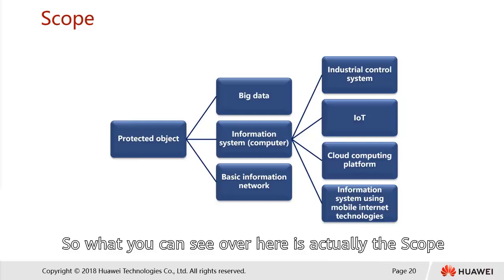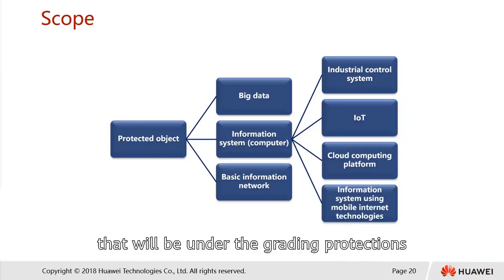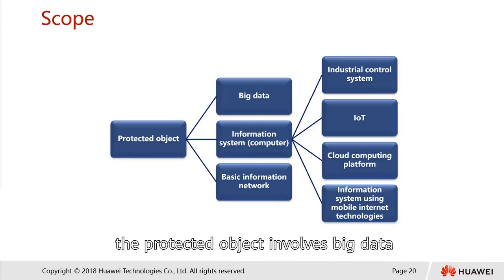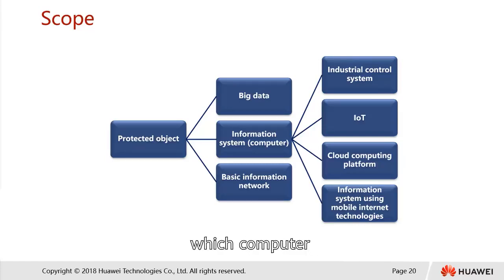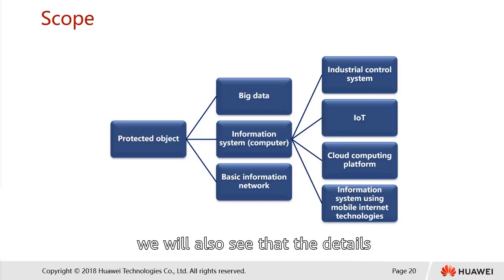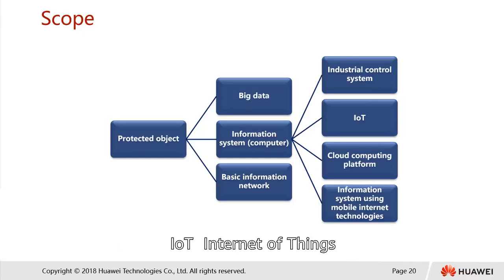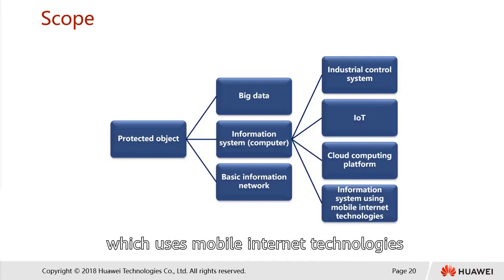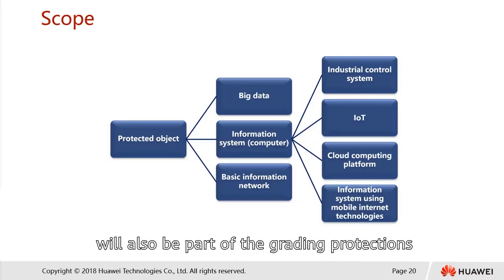The scope that falls under graded protections of information security: the protective objects involve big data, information systems such as computers, as well as basic information networks. Among the most important information systems, details such as industrial control systems, IoT (Internet of Things), cloud computing platforms, and information systems using mobile internet technologies will also be part of the grading protections.